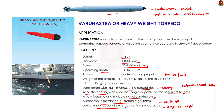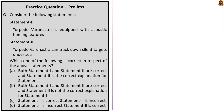Now let us move on to our next part of discussion — the prelims practice questions. Let us take up our first question. This is a statement-based question about torpedo Varunastra. Statement one says that torpedo Varunastra is equipped with acoustic homing features, and statement two says that torpedo Varunastra can track down silent targets under the sea. In our discussion, we saw that Varunastra is equipped with acoustic homing features, meaning it can listen for sounds underwater and track down submarines that are trying to be really quiet. So both statements are correct and statement two explains statement one. The answer here is option A.